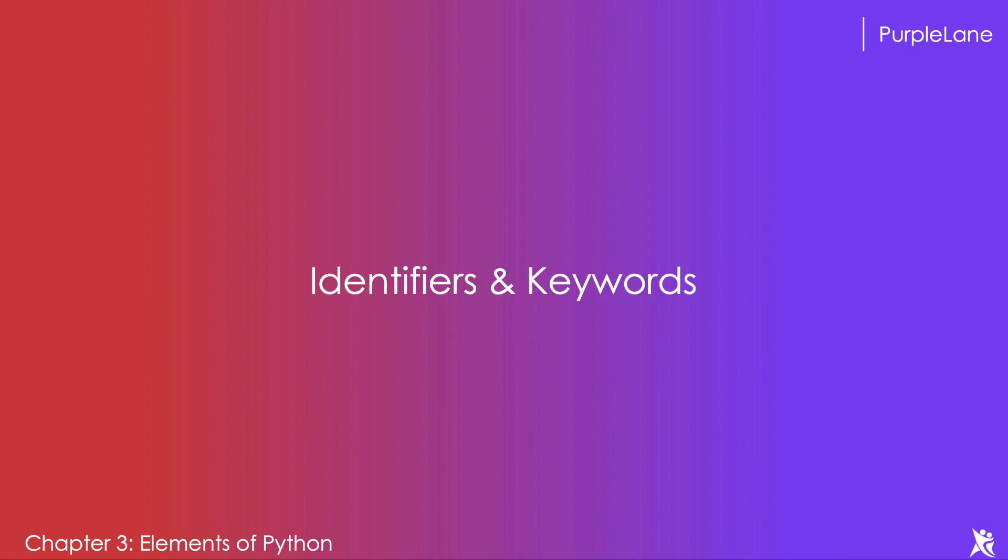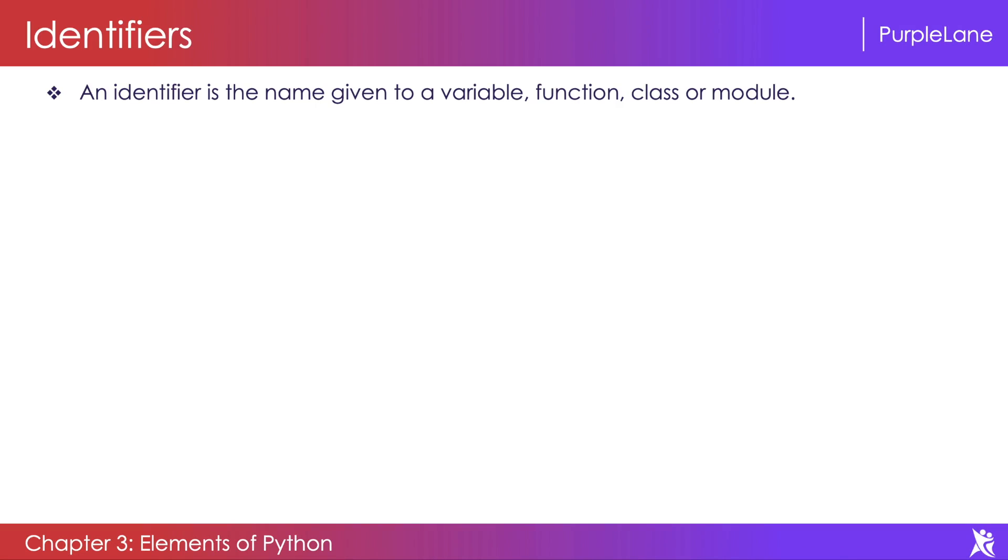Hello everyone, in this video we shall look at identifiers and keywords. An identifier, which is also referred to as a name, is given to a variable, function, class, or module. There are some set of rules you should follow while naming any of these.